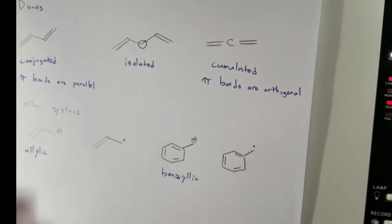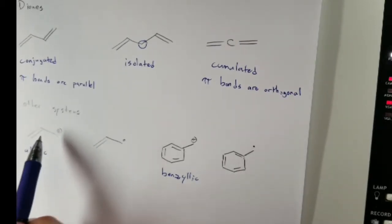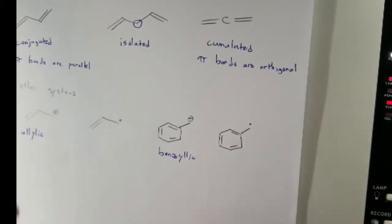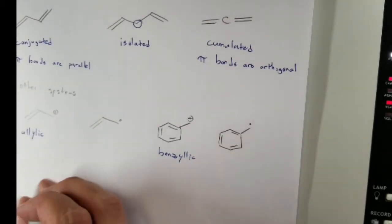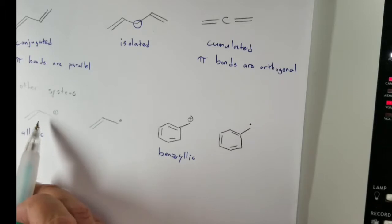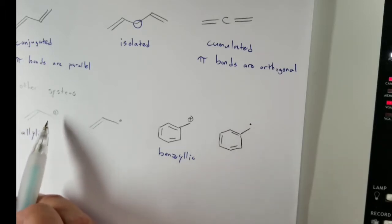These particular types of carbocations or radicals are resonance stabilized. The reason why they're able to undergo resonance is because of the way the pi bonds are sitting. I'm going to draw out the orbitals for this one.